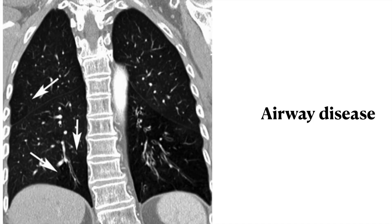Coming first to hypoperfusion and mosaic perfusion. This can be because of mostly two reasons: either it can be due to the airway, where the small airways have been damaged resulting in reflex vasoconstriction, or it can be vascular, where the vessels as such are having a problem. This particular CT scan is showing decreased attenuation — almost the whole of the left lower lobe is having decreased attenuation, and we have some mosaic attenuation in the right side in both the upper and lower lobes.